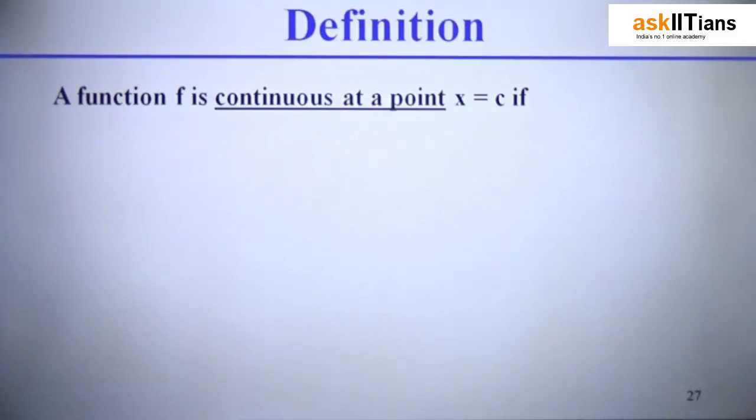Let's understand it more mathematically. That was a more intuitive one. In terms of mathematics, the function f is called continuous at a defined point c if the first and foremost condition is that the function has to be defined at that point, that is f(c) is defined.